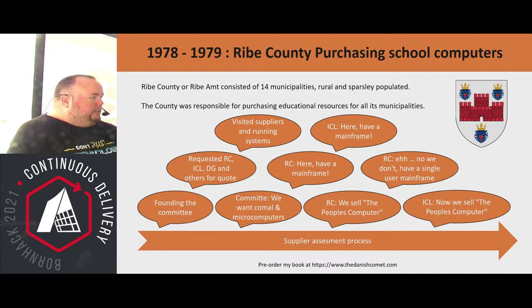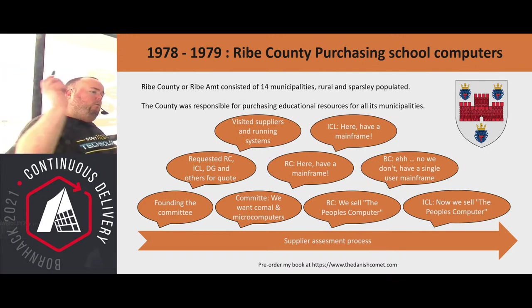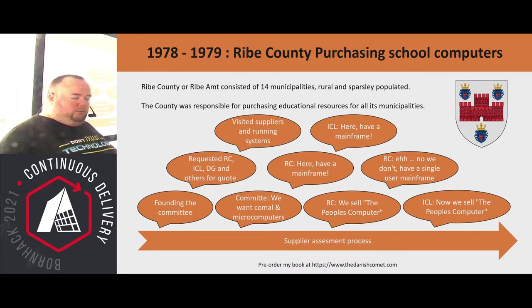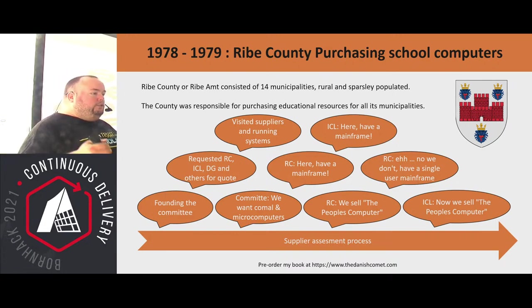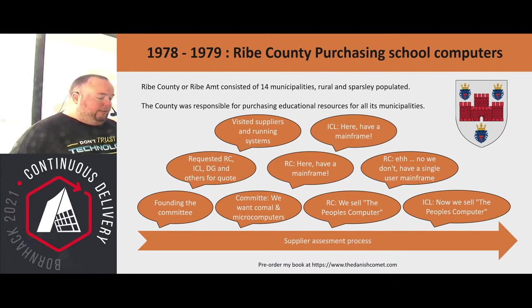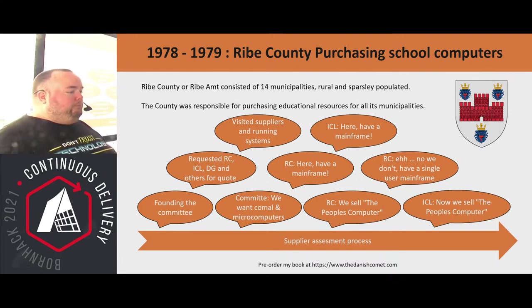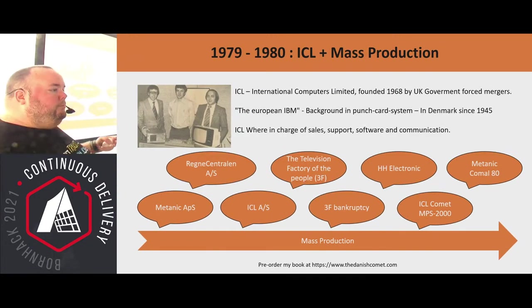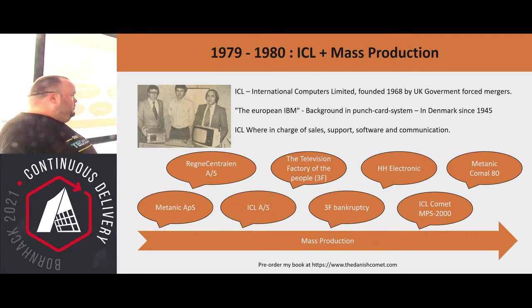Regnecentralen's response was essentially: 'You want COMAL? We can do that. You want a microcomputer? Well, you can have a mainframe.' ICL's response was similar. Then Regnecentralen said, 'Oh, we found this guy called Mons Pelle and Bo Christensen, and they've built this computer — we're selling it for them.' That was in the fall of 1979. Only two weeks later, Regnecentralen came back and said they didn't want to sell it after all, and were going to build their own microcomputer — which would cost as much as a mainframe but could only be used by one person.